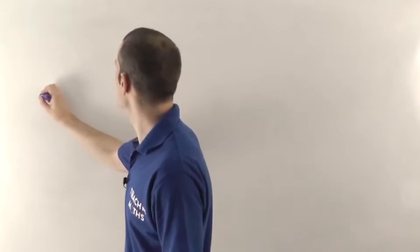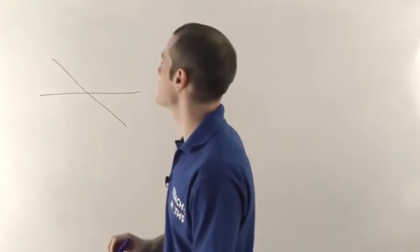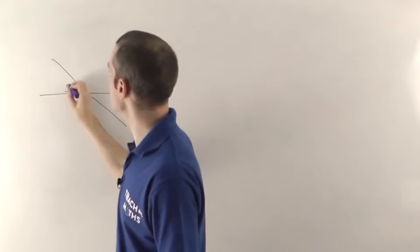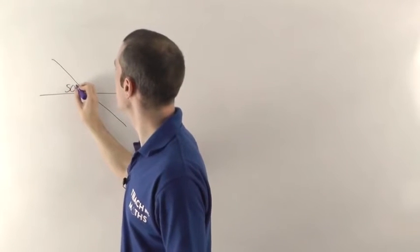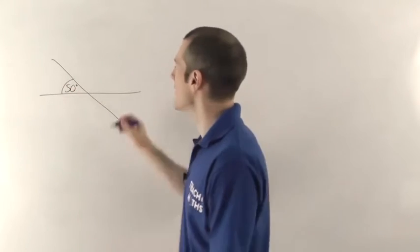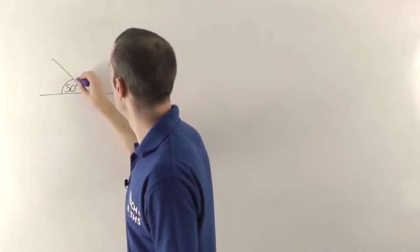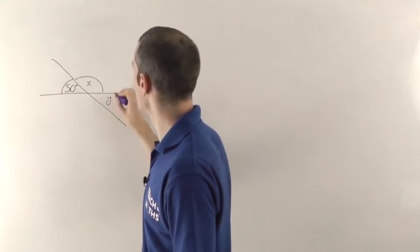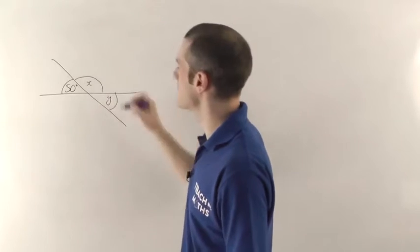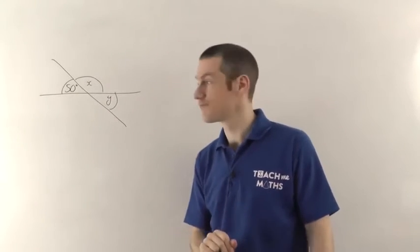Imagine you've got two straight lines that cross like that. We're told that this angle here is 50 degrees, and we need to work out what angle X and angle Y are — these two angles, we've got to find out what they are.